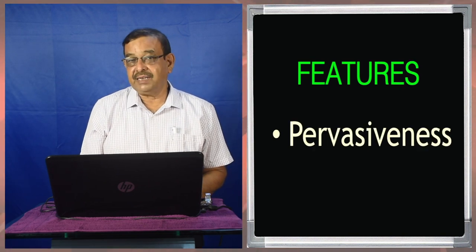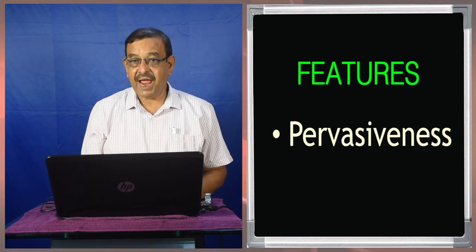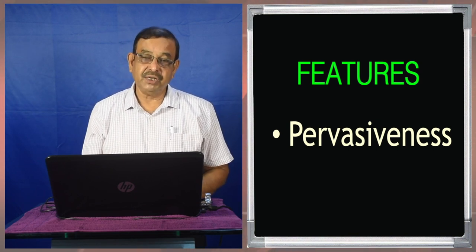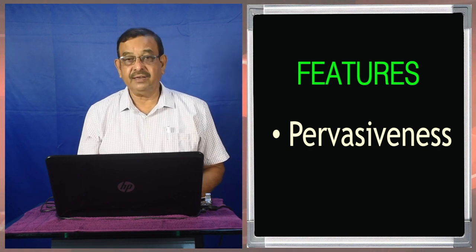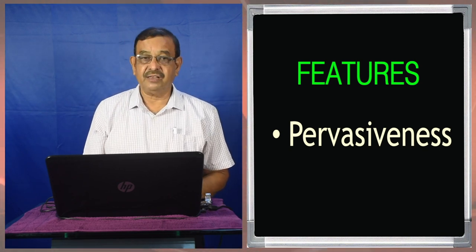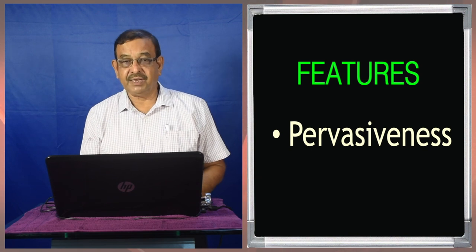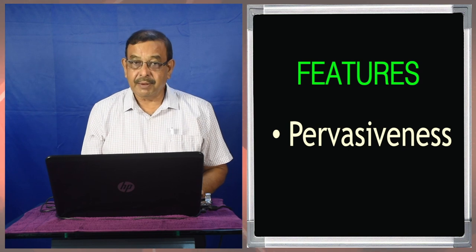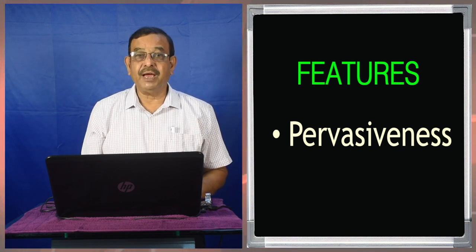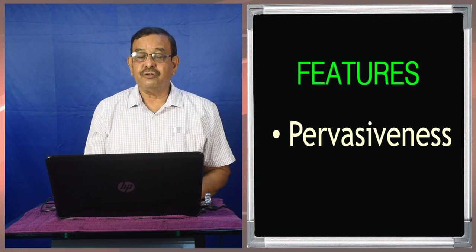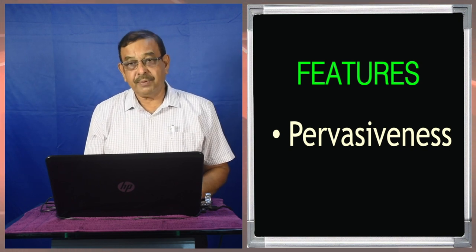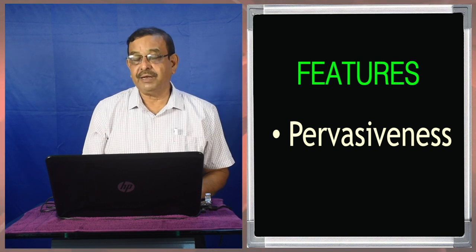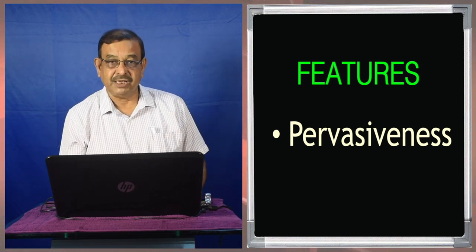The third feature is pervasiveness. Planning is all-pervasive, meaning it applies to each and every management function — be it marketing, production, finance, process, or materials everywhere. We have the planning. For materials we have the materials requirement plan, in case of recruitment we have the manpower plan, and the supervisor as well as top management also have to plan. It is pervasive irrespective of levels of management and irrespective of functions of management.